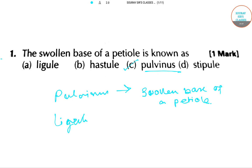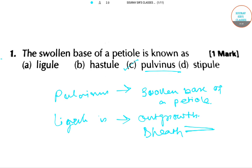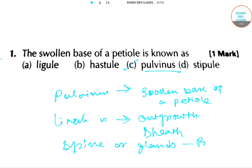The ligule is an outgrowth or projection from the top of the sheath. So if there is a sheath, the outgrowth or projection from it is what a ligule is. Spines or glands are found at the base of the petiole.